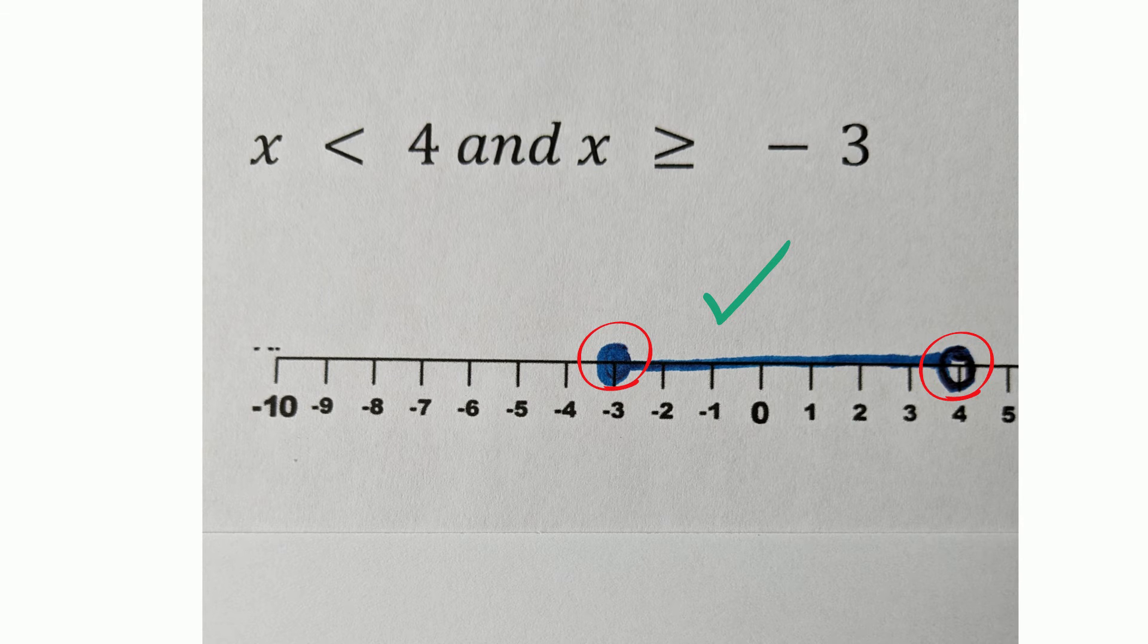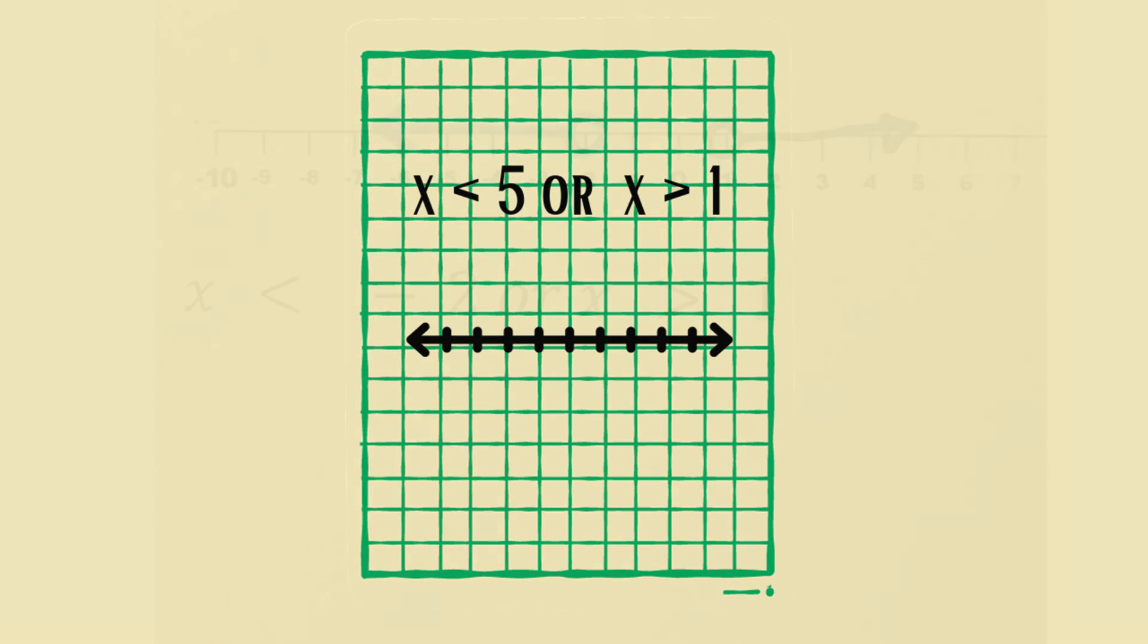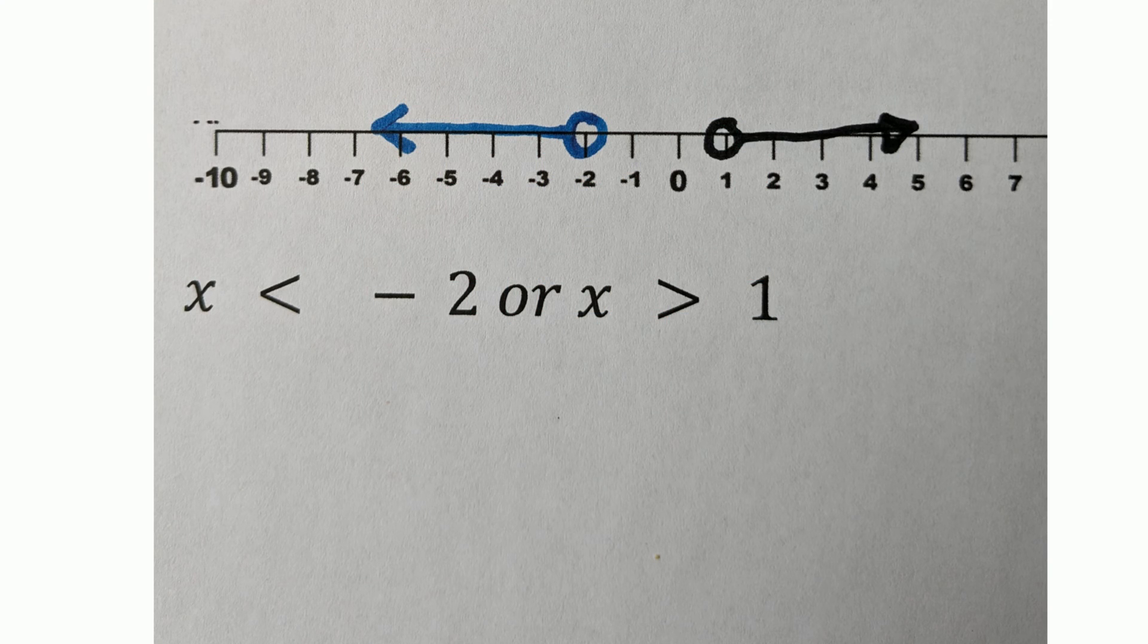Now let's take a look at an inequality using OR. Let's graph it. And based on the two graphs, the union is either any number less than negative 2 or greater than 1. So that's what compound inequalities are,